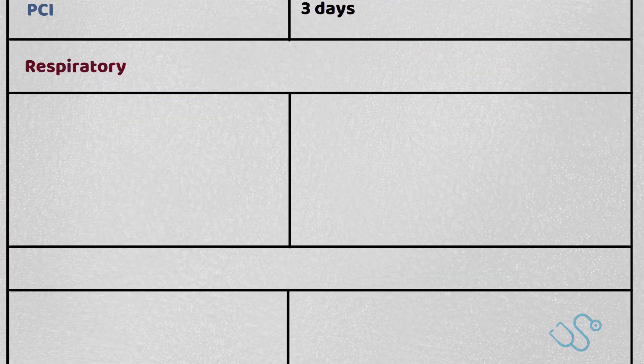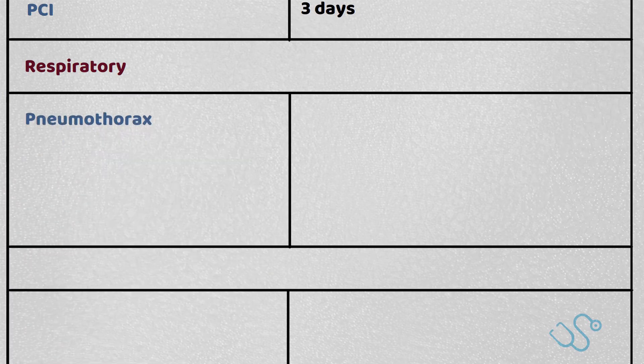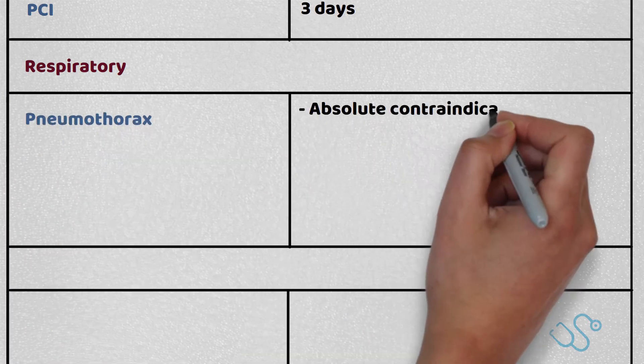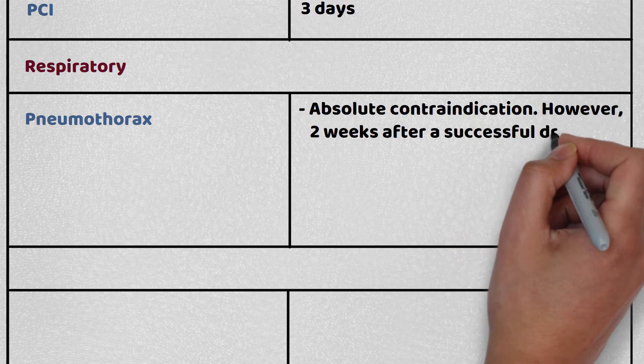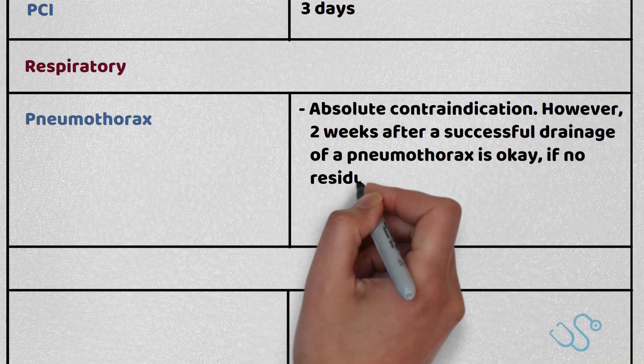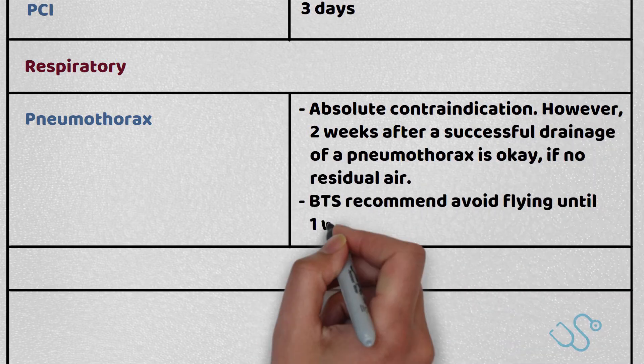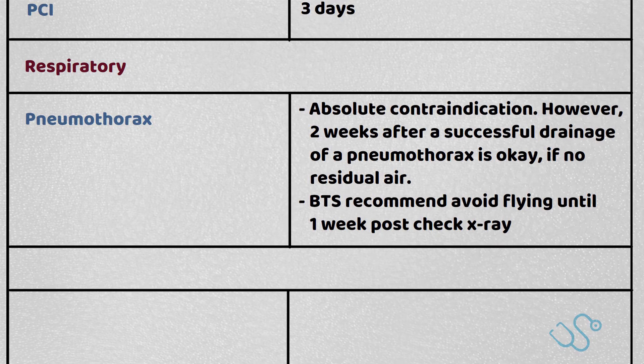What about respiratory disease? If you've had a pneumothorax, it's an absolute contraindication to fly. However, you can fly 2 weeks after successful drainage if there's no residual air. The British Thoracic Society also recommend avoiding flying until 1 week post a check x-ray.